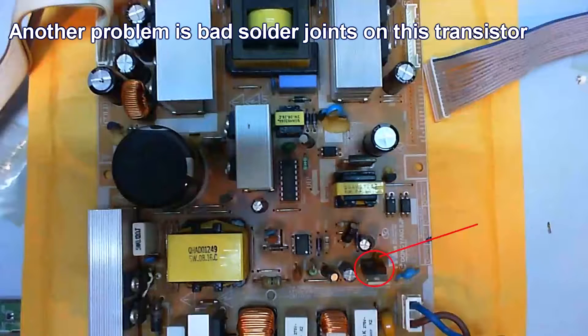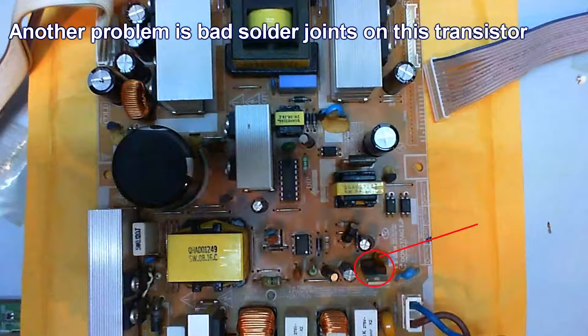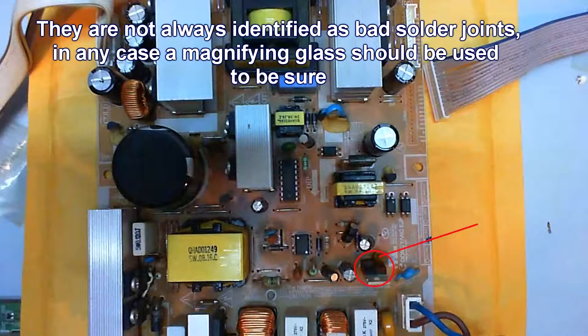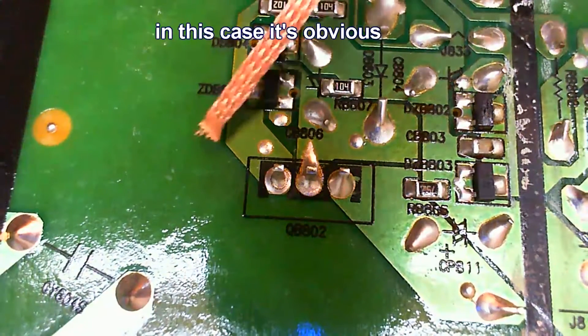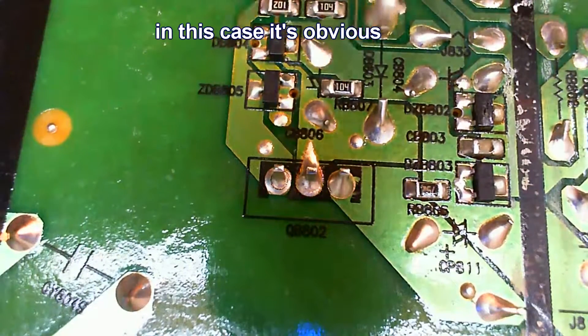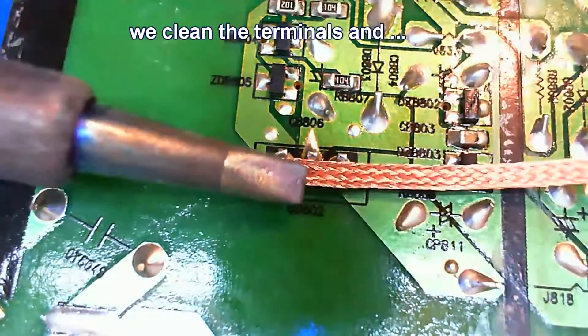Another reason may be this transistor here, which I had three TV sets with the same fault, bad solder joints on this transistor. If it fails, in my case, the TV was turning off after a month or so. Sometimes it wouldn't turn on at all and it was always bad solder joints on this transistor.